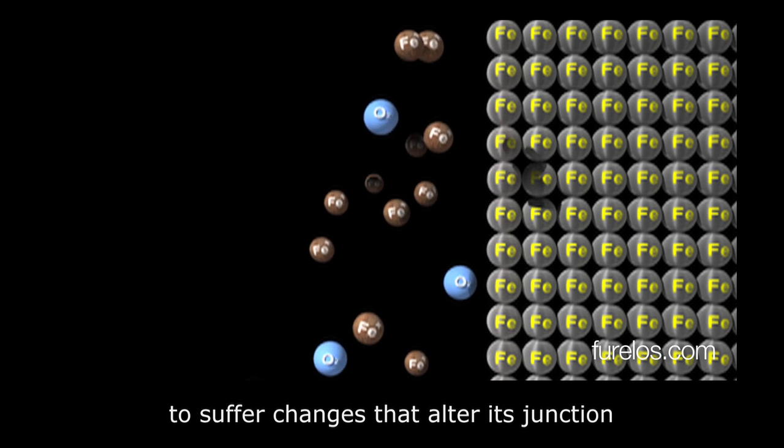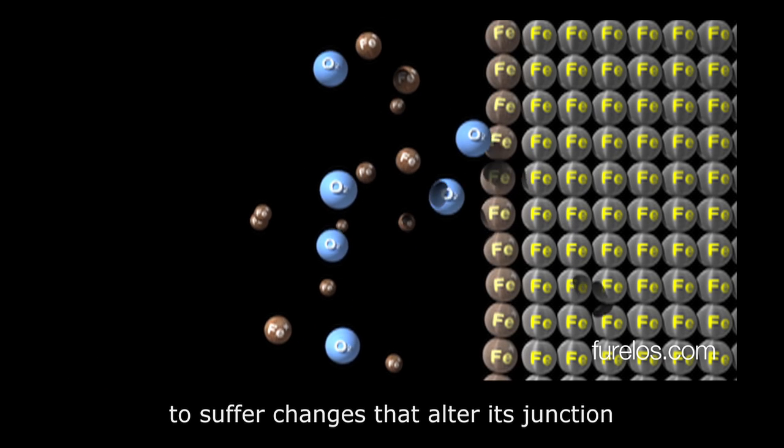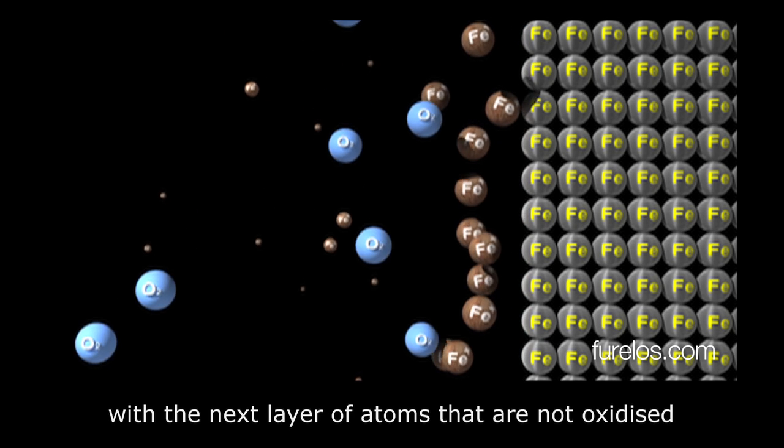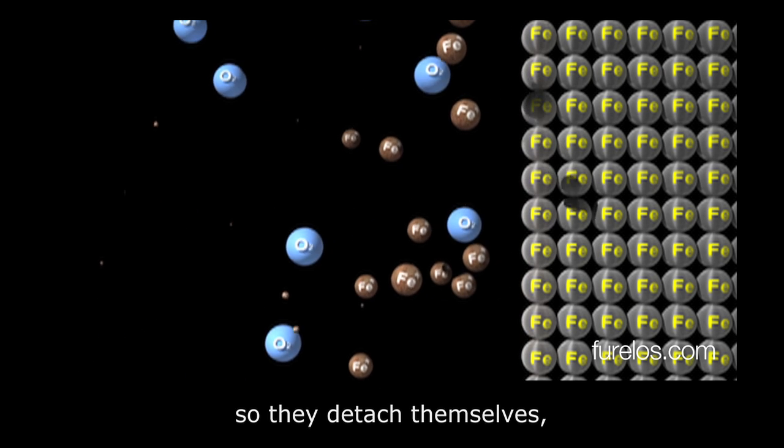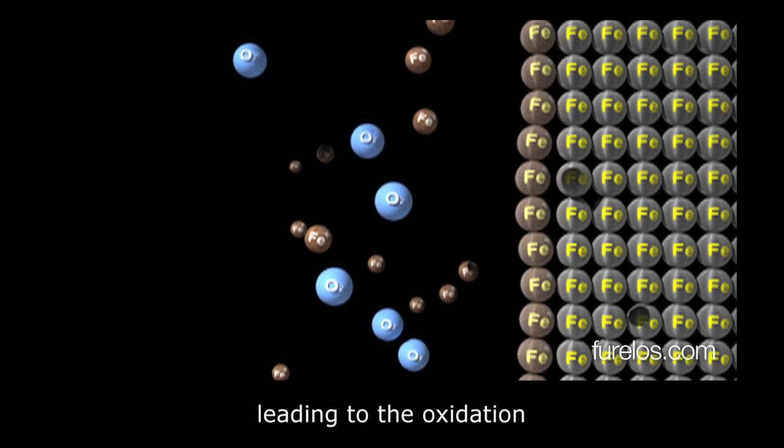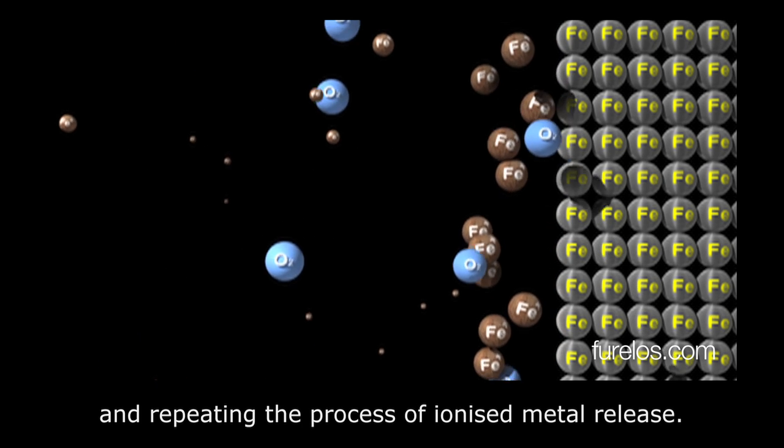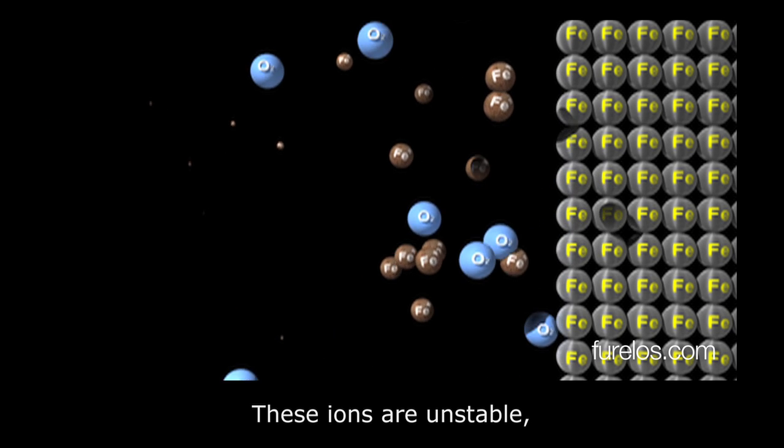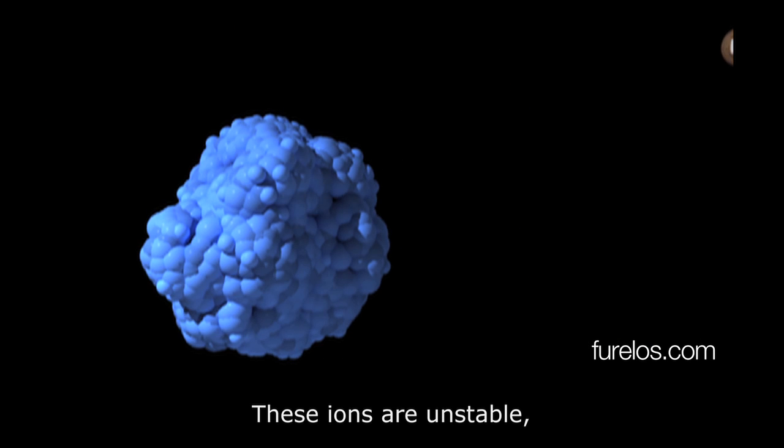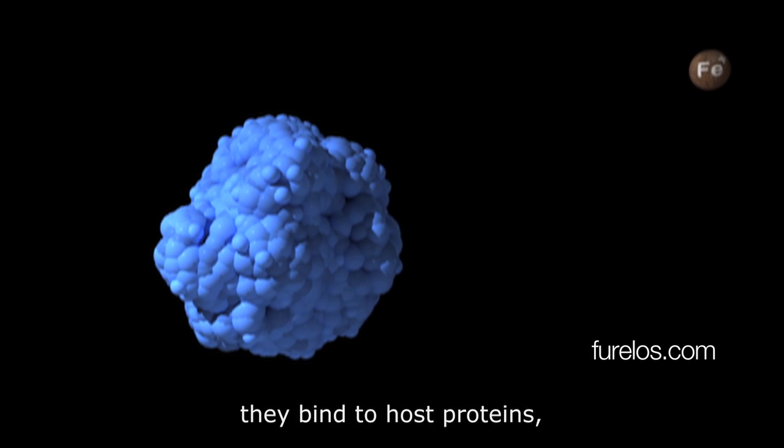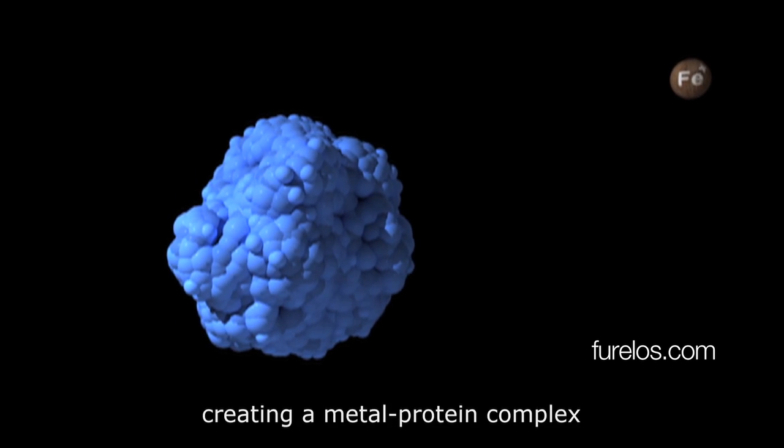That are not oxidized, so they detach themselves, leading to the oxidation of the next layer of atoms and repeating the process of ionized metal release. These ions are unstable, and to restore stability, they bind to host proteins.